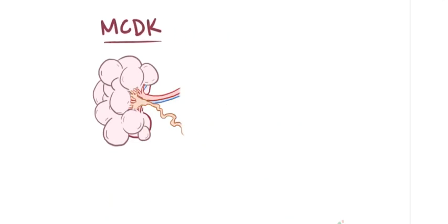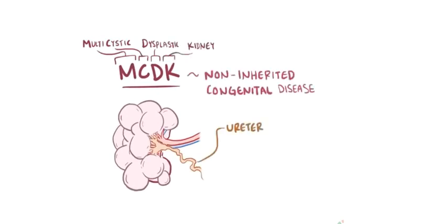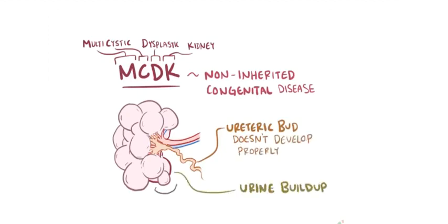Alright, so as a quick recap, multicystic dysplastic kidney is a type of non-inherited congenital kidney disease where the ureteric bud fails to develop properly, resulting in a buildup of urine and formation of cysts.